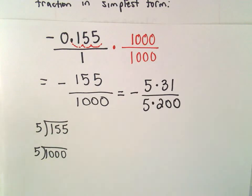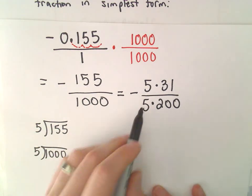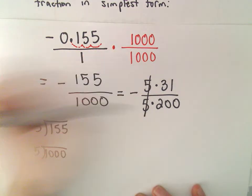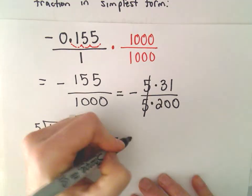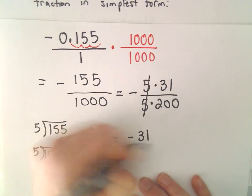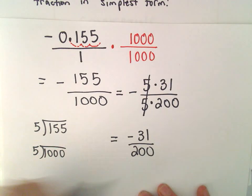Okay. So, again, I'm just writing the numerator and the denominator as 5 times some number, 5 times some number. We can cancel out those common factors. 31 is a prime number. So even though the denominator certainly factors a little further, there's not going to be any other common factors that we can eliminate that will help us reduce this fraction.